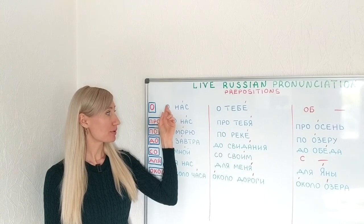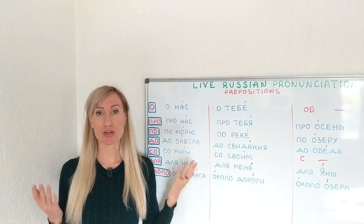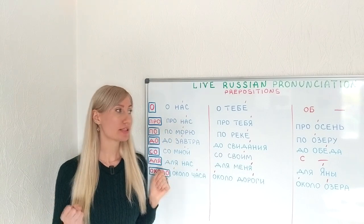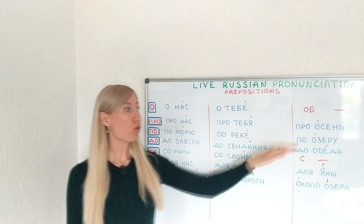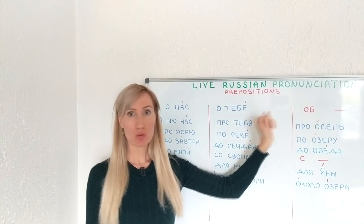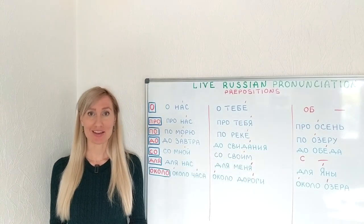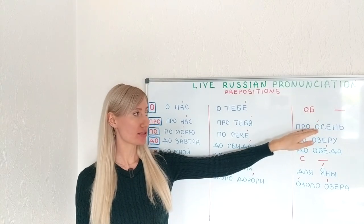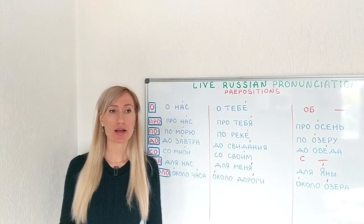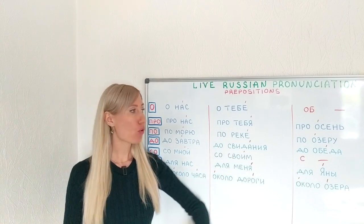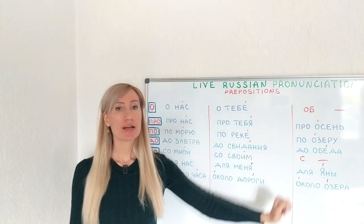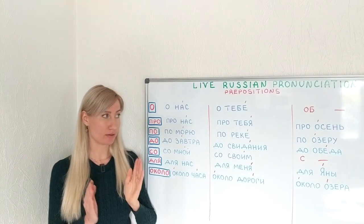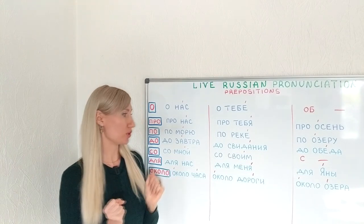You notice that prepositions are not stressed at all — the following word is stressed and the preposition is unstressed. What if a word starts with О? ПРА ОСЕНЬ — here О is stressed in the word ОСЕНЬ. That's why we say ПРА ОСЕНЬ. But if О wasn't stressed it would sound like ПРА А.